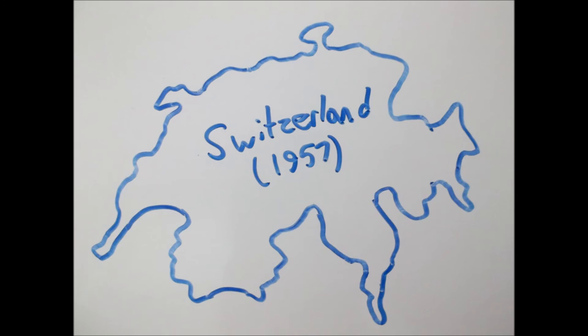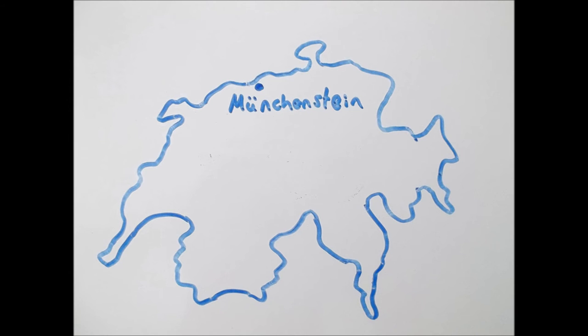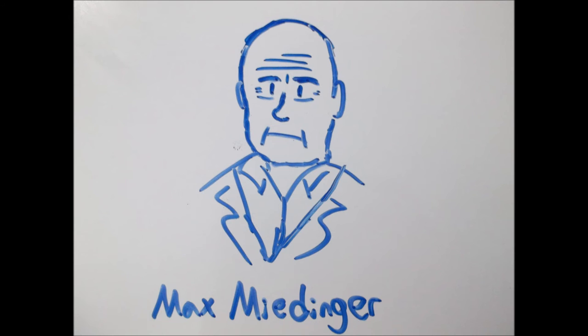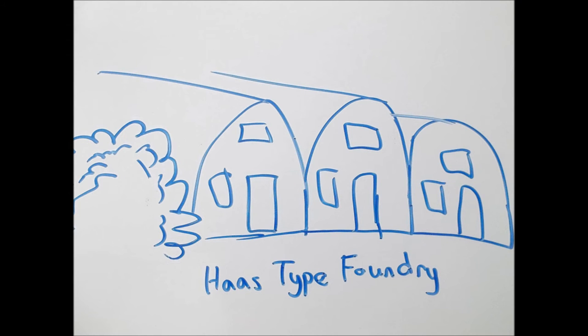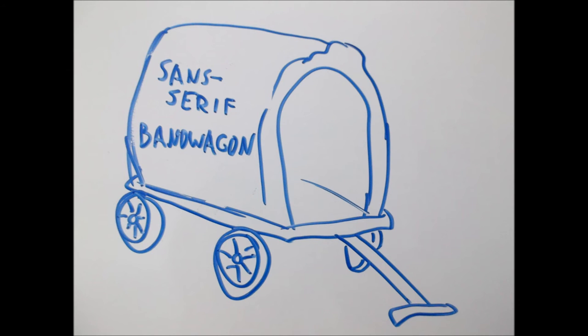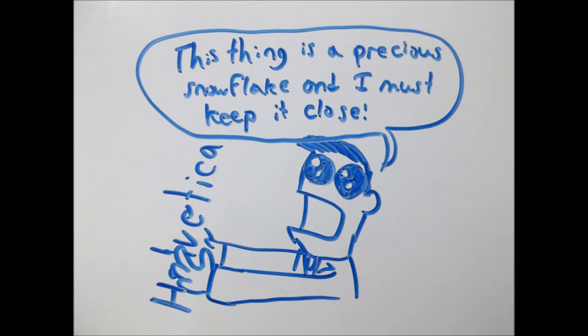The king of all fonts came to be in 1957 Switzerland. In the town of Munchenstein, a man named Mack Miedinger working at the Haas-type foundry created Helvetica in an attempt to jump on the ever-growing bandwagon that sans-serif typefaces were becoming the more popular choice among designers. What Miedinger didn't know was that over the next 50 years, Helvetica would come to be the absolute standard of fonts in the 20th century.